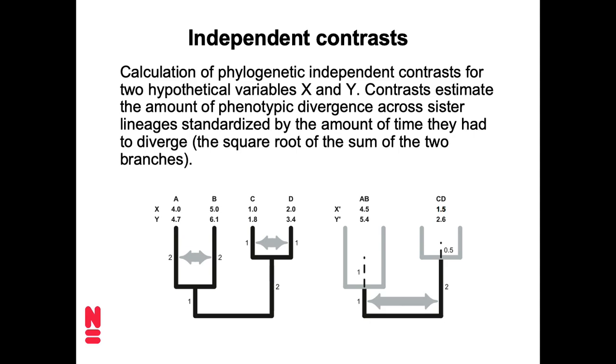So what do we have here? We have now four lineages, A, B, C, and D. And for those four lineages at the tips, the values for two continuous traits have been measured, trait X and trait Y. And so in the tree on the left, we can see those raw values at the tip. So A has a value of 4 for X, B has a value of 5, C has 1, and D has 2. And for Y, A has 4.7, B has 6.1, C has 1.8, and D has 3.4.